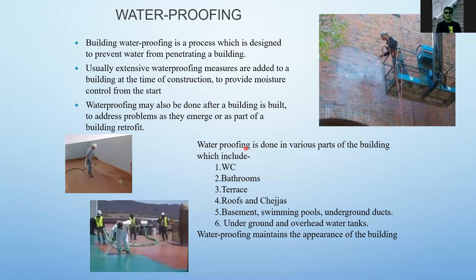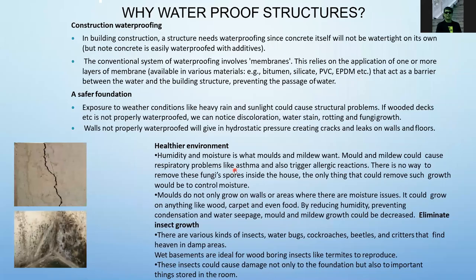These are different ways to waterproof a structure. In building construction, a structure needs waterproofing since concrete itself will not be watertight on its own. You can put additives to make concrete more watertight, but it is not fully reliable. The conventional system of waterproofing involves membranes — the application of one or more layers of membrane using materials like bitumen, silicate, PVC, and EPDM, which act as a barrier between water and the building structure.